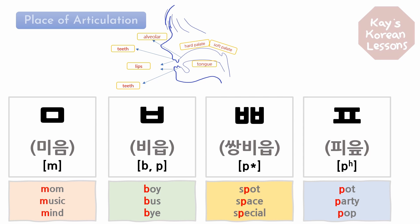Today's consonants are created in the lips area. Most of you won't have any problem with these. ㅁ sounds like M in mom, music, and mind — it's perfectly the same as M in English. ㅂ sounds like B in boy, bus, and by, but Korean ㅂ is a little bit in between the B and P sound. So heads up — it may sound like both B and P.